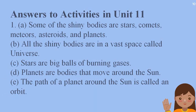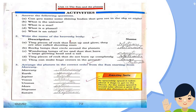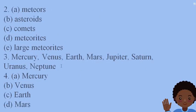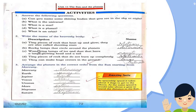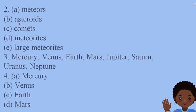Now write the names of the heavenly bodies. Part A: tiny pieces of rocks that heat up and glow — they are also called shooting stars. We have read this in the chapter. Next part: rocky lumps that circle around the planet — these are called asteroids.